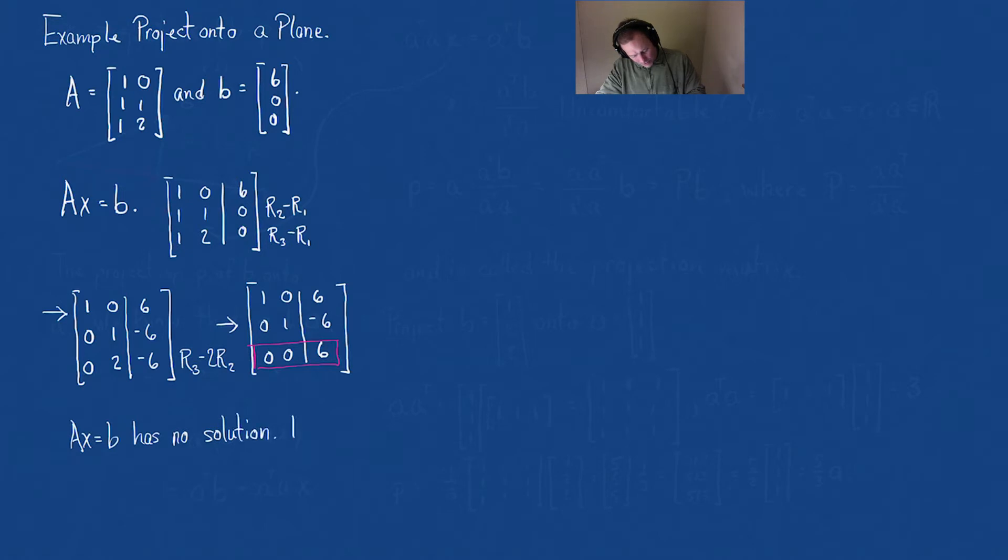So what you can also say is that B is not in the column space of A. So our best solution, the next best alternative, is the projection of B onto the column space of A.